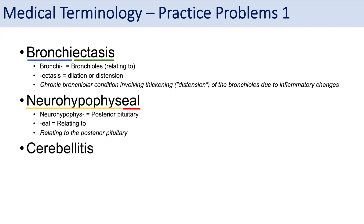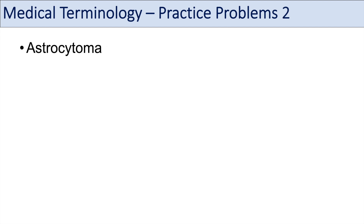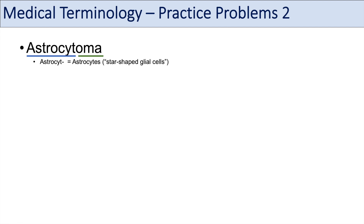The next practice term is cerebellitis. The prefix cerebel or cerebello refers to the cerebellum, the part in the back of the brain involved in motor coordination. The suffix -itis means inflammation of. So cerebellitis is an inflammation of the cerebellum. The next term is astrocytoma. The prefix astrocyte refers to astrocytes — astro means star and cyte means cells, so they are star-shaped glial cells. The suffix -oma means tumor. So an astrocytoma is a tumor of astrocytes.